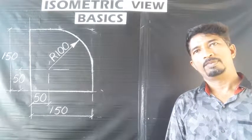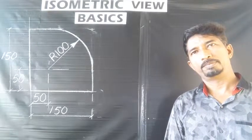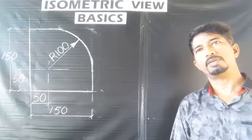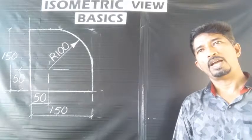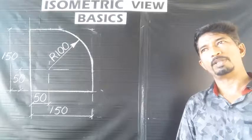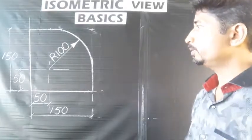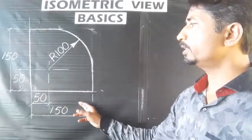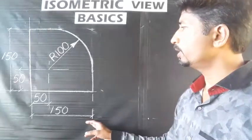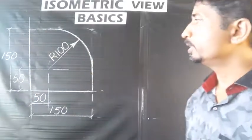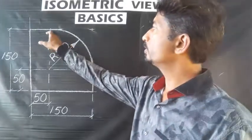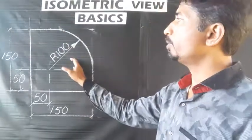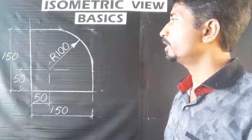Welcome to the tutorial on plotting of isometric view. In this example, we will see a simple drawing of a square-shaped object, 150mm by 150mm in size. There is also a 100mm radius arc. This is an arc isometric view.